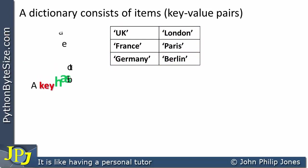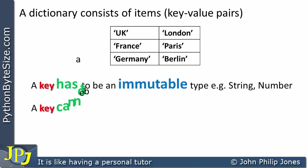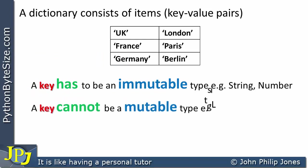When we consider a key, a key has to be an immutable type. That means it can be a string, as in this case, or it can be a number such as an integer or a float. A key cannot be a mutable type — for example, a list.